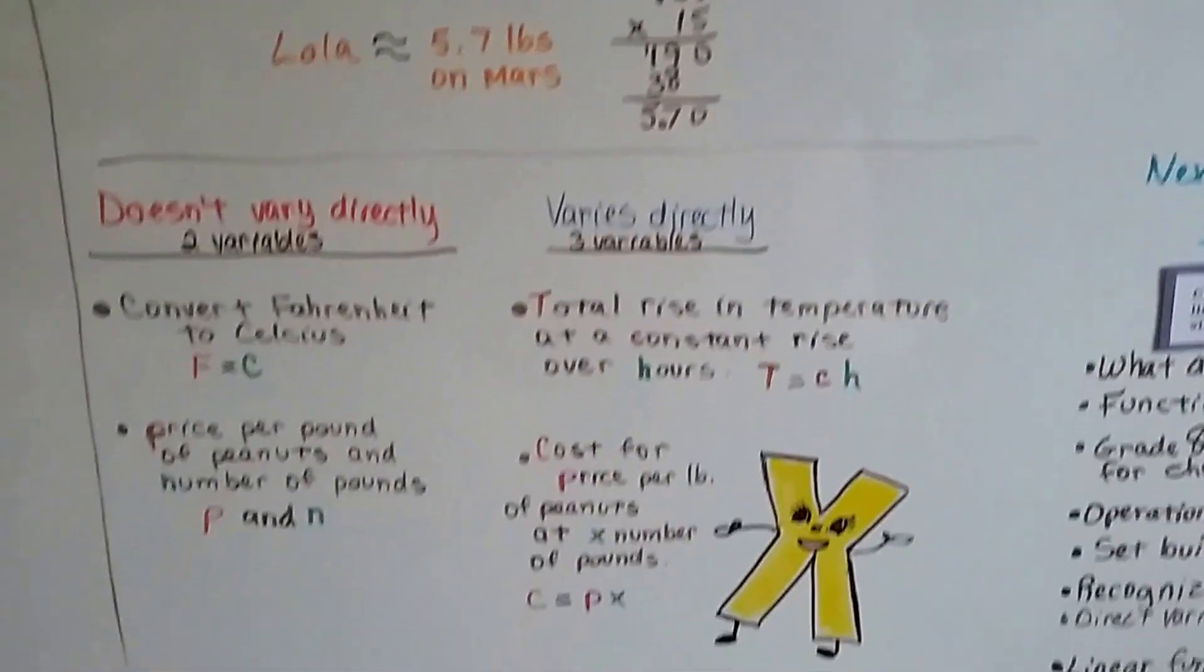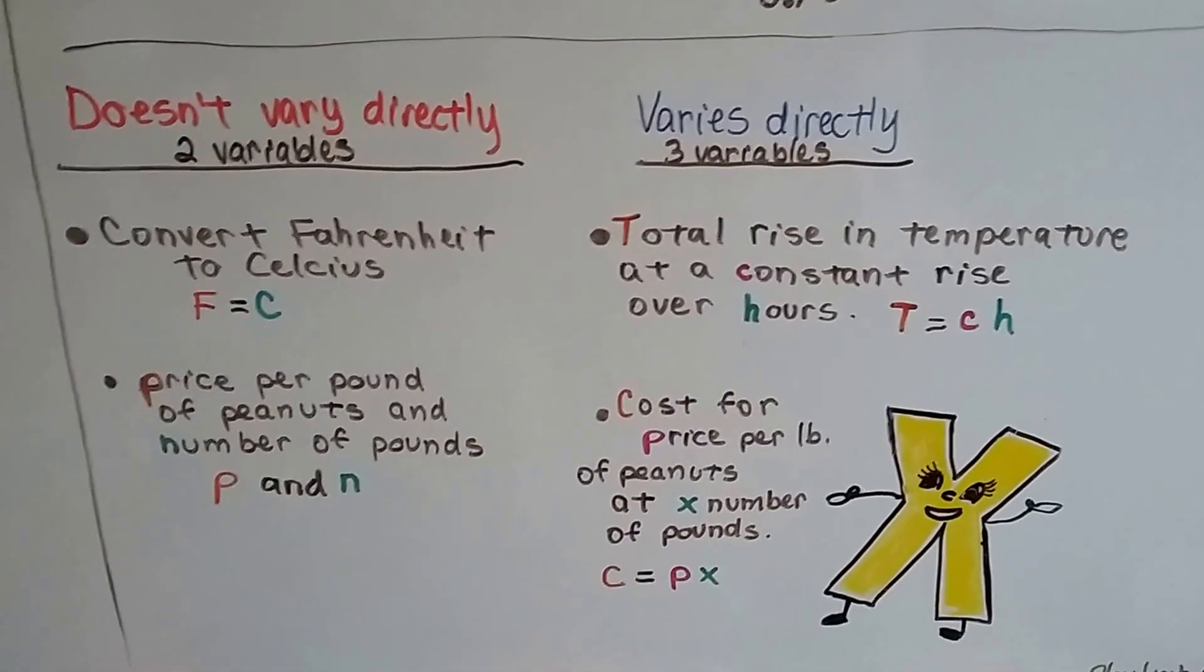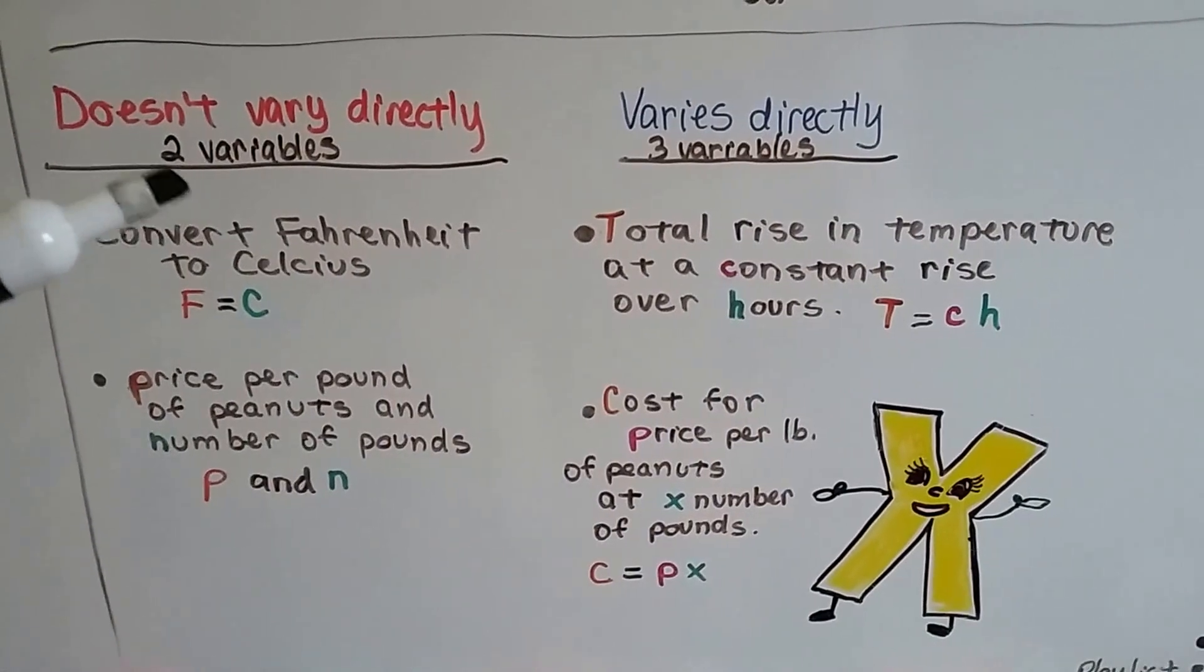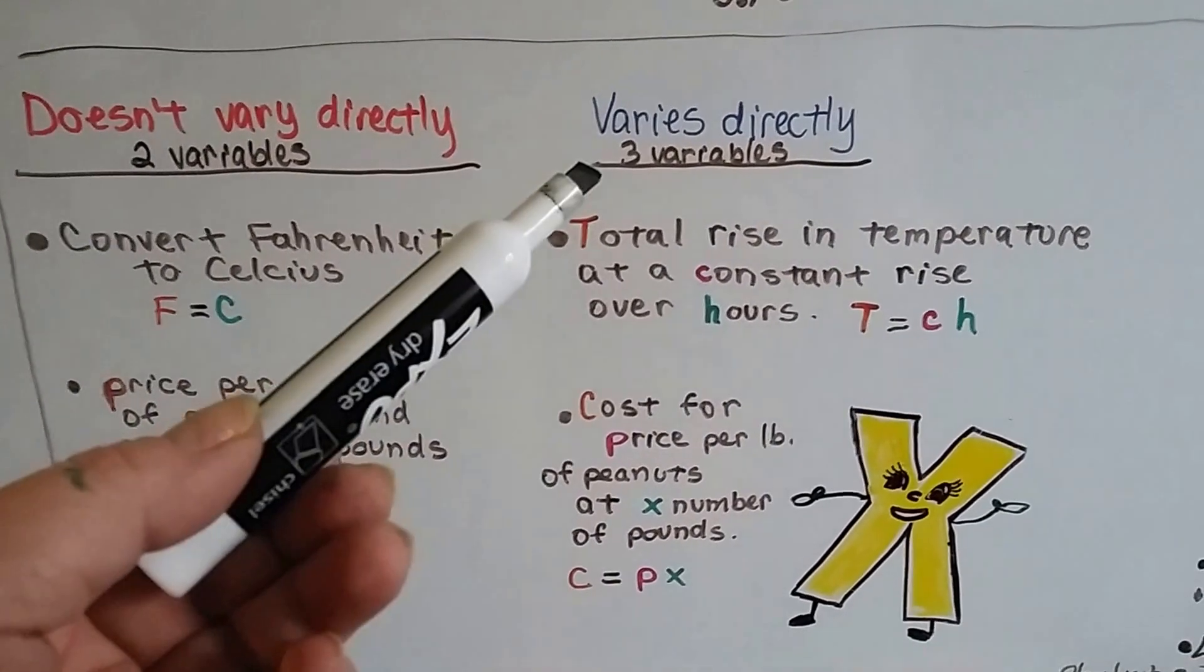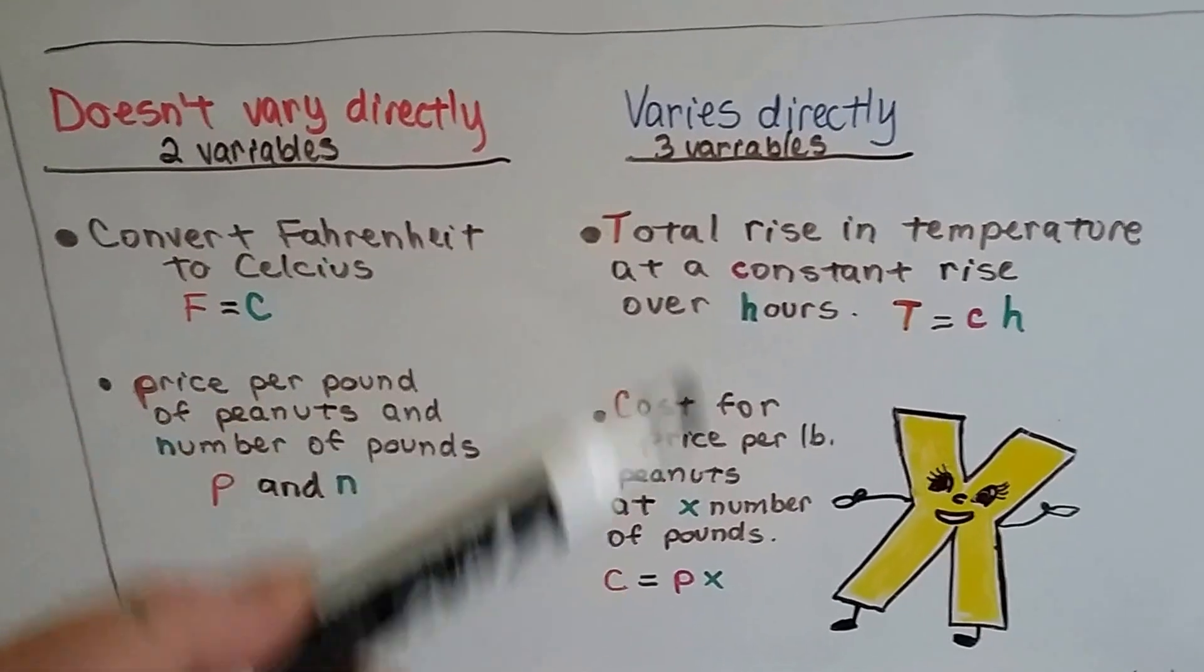Here's the difference. These don't vary directly, and these vary directly. The ones that don't vary directly have two variables. The ones that vary directly have the three variables, the y, the k, the x.